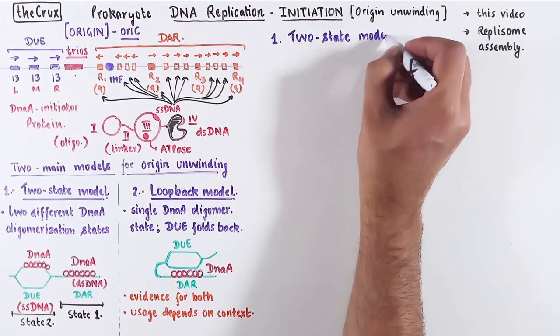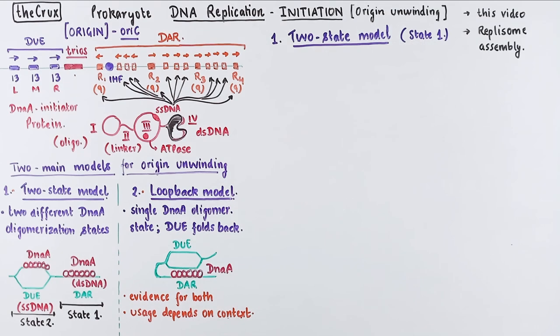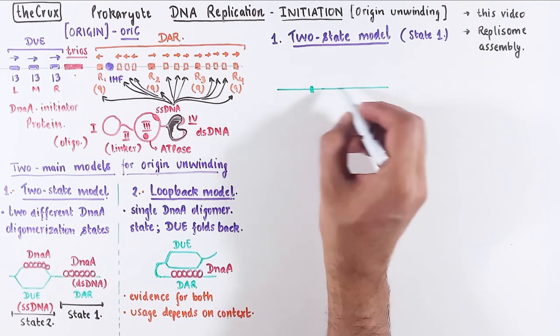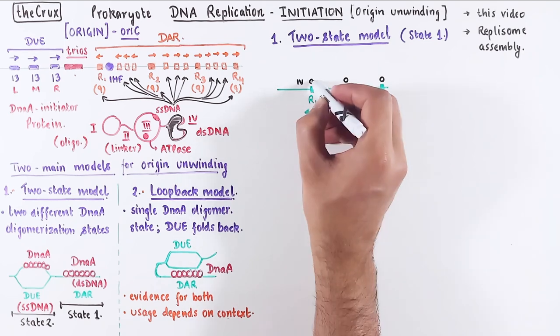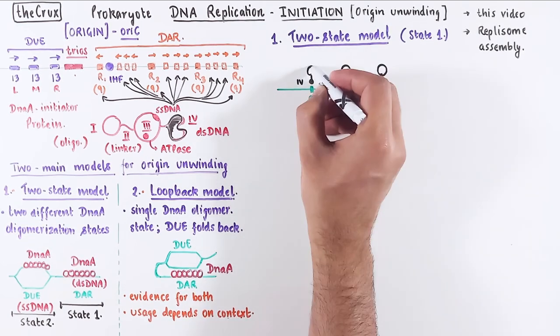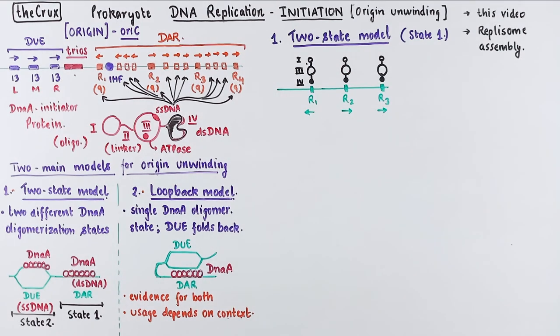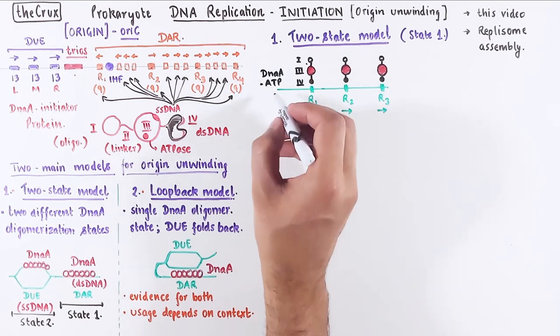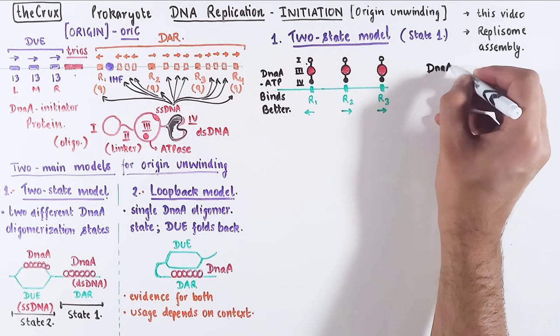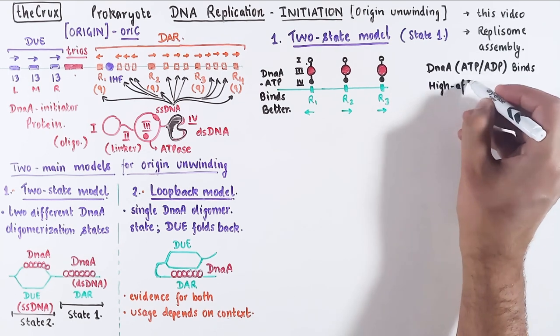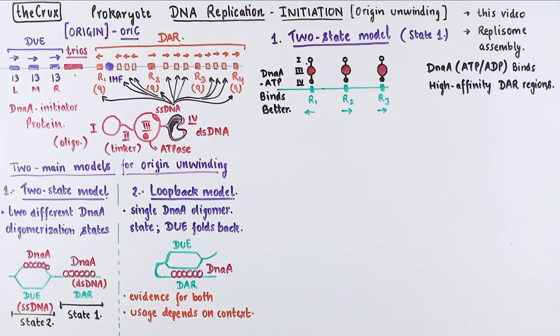In any case, let's take a deep dive into these two models. We will start with the two-state model, and let's begin with state 1 description. The focus of the origin begins with the R1, R2, and R4 regions, because they are high-affinity sites for DnaA protein. The domain 4 of DnaA protein recognizes these regions and binds to it, which means that in this representation, the farthest domain is the domain 1. And I will color the domain 3 red just to signify that these are the starting DnaA protomers. More specifically, the DnaA ATP binds better at these sites, but ADP works just fine as well. So the first step is the binding of DnaA at these high-affinity regions in DAR.